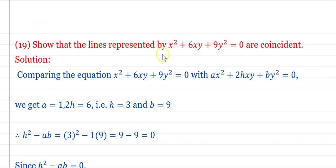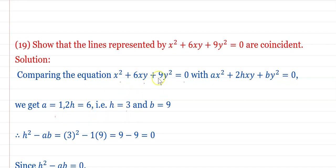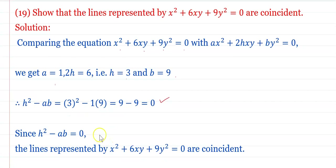Show that the lines represented by x² + 6xy + 9y² = 0 are coincident. The coincident condition is h² − ab = 0. Comparing with ax² + 2hxy + by² = 0: a = 1, 2h = 6 so h = 3, b = 9. Therefore h² − ab = 9 − 9 = 0. Since h² − ab = 0, the lines are coincident.